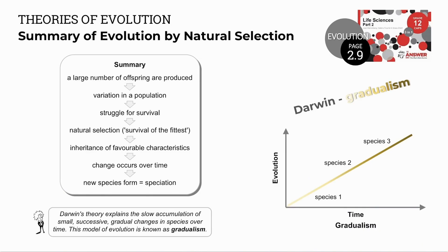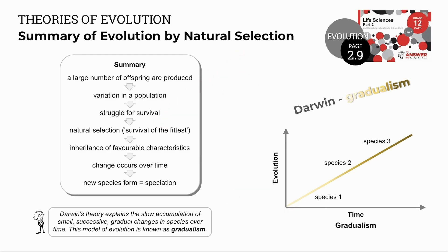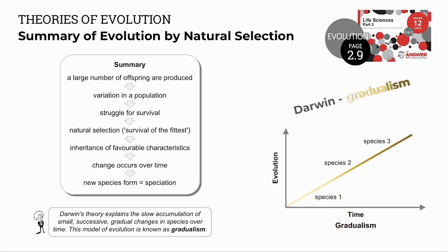Another quick summary of evolution by natural selection: there is a large number of offspring, there is variation in the population, and there is a struggle for survival. This may be due to a lack of food, mates, shelter, light, space, or water — all known as selection pressures. These selection pressures result in natural selection and survival of the fittest, or extinction of the less fit. Favourable characteristics are inherited, populations change over time, and there may be speciation where new species are formed. These small, slow changes in species over time are known as gradualism, where species slowly become more and more different until they form new species.